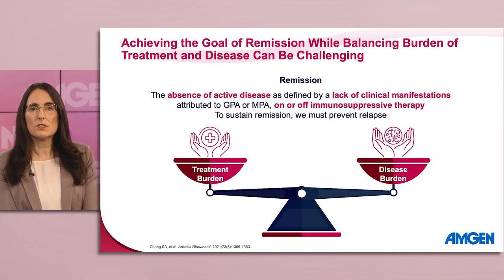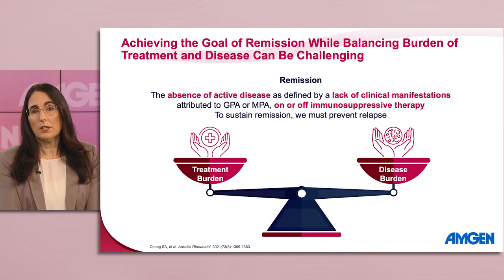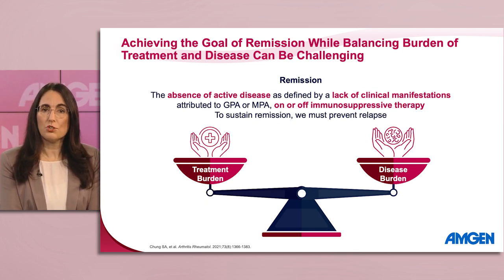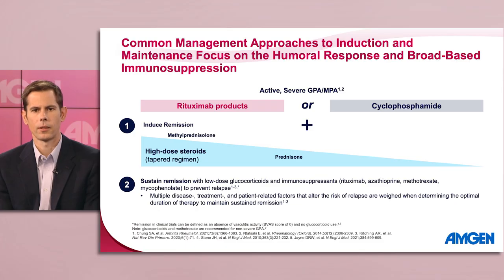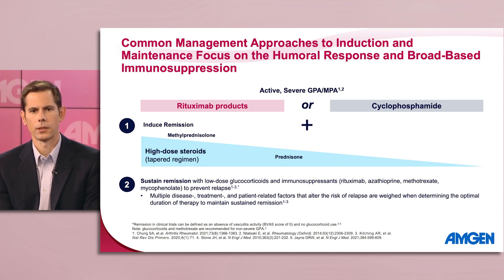While working with patients such as Jane, it is important for us to consider the challenges associated with achieving our goals of care. Clinically, our aim should be to achieve and sustain remission. Remission is defined by the American College of Rheumatology guidelines as an absence of disease activity as characterized by a lack of clinical manifestations attributed to GPA or MPA on or off immunosuppressive therapy. Once we achieve remission, we should look to sustain it while balancing this goal against the burden of treatment.